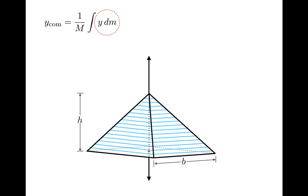So why is that? Well, the reason is that with horizontal slabs, all of the mass in a given slab is at the same distance y away from the apex. So if you look again at the center of mass equation, all that we need to do is determine the mass dm of a slab at a distance y from the apex.